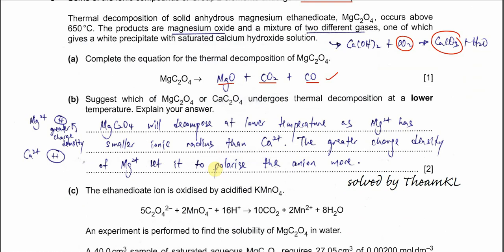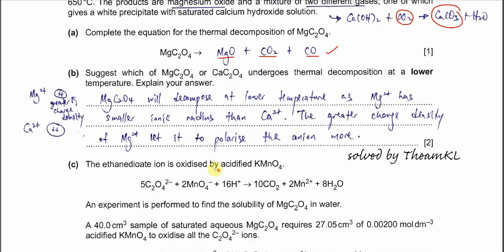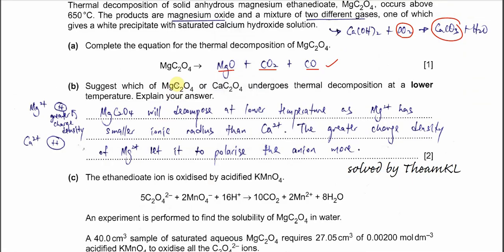For part B, suggest which of magnesium ethanedioate or calcium ethanedioate undergoes thermal decomposition at lower temperature, means which one is easier to decompose, the magnesium salt or calcium salt.